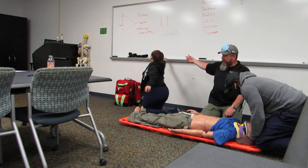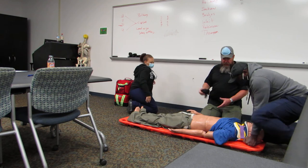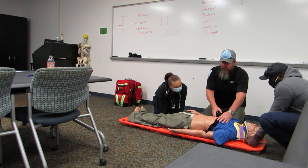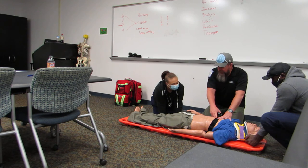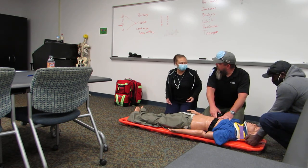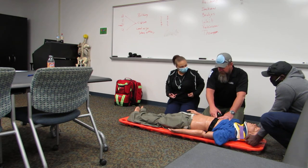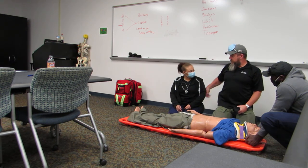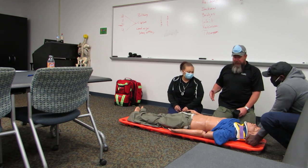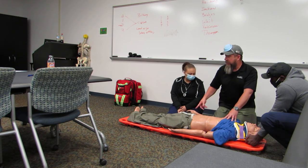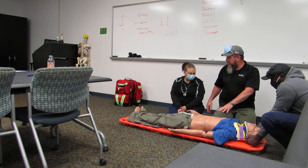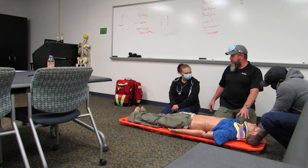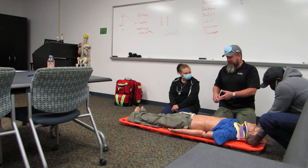Now we can strap him in. Starting at the torso — we want to be about chest level. Best place is right underneath the armpits. We're strapping them in watching their breathing — we're already having problems with breathing. While I'm doing this, I have my other person go ahead and get another set of vitals, because I want to see how his breathing is improving — pulse ox, blood pressure, that kind of thing.